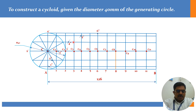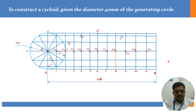Only the cycloid curve itself should be drawn as a thick line — it starts from A and ends at B. All other construction lines should remain thin lines. So now we have constructed the cycloid.